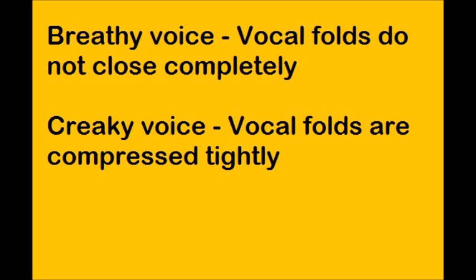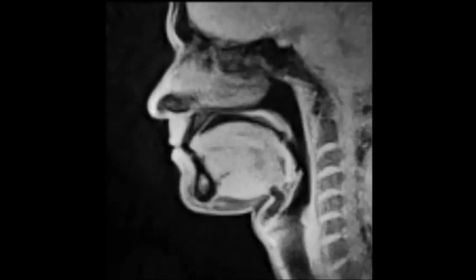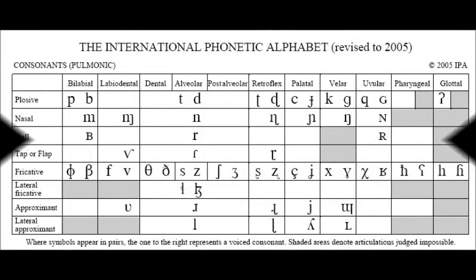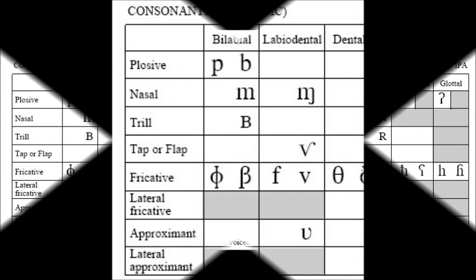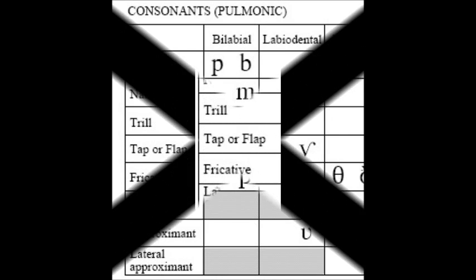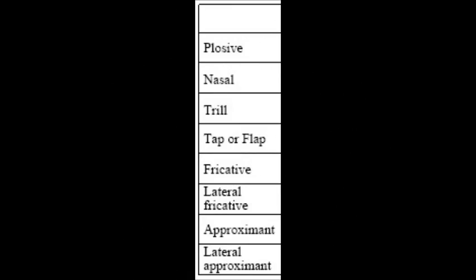Let's move on now to different manners of articulation. This refers to different ways the airflow is obstructed in the vocal tract. You may find it useful to follow along the IPA chart at this point. Pause the video now to go get the chart and read along the column on the left-hand side. We will start by introducing some of the symbols found on the IPA chart to get you used to them.